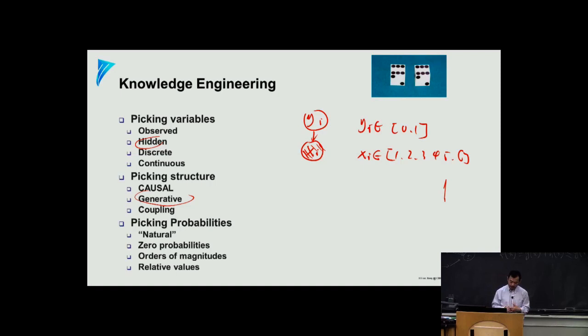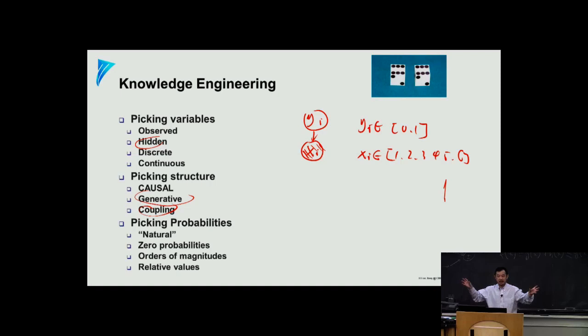There is another type of structure called coupling we'll see later. For example, the chloride and sodium atoms are next to each other in salt. Are they causing each other anything? Probably not. But they are coupled — and that's a type of relationship we'll model another way.